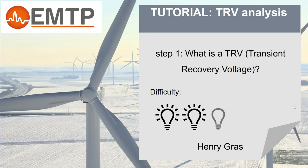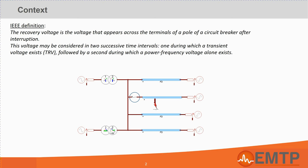The first step of this series will be to understand what a TRV is. According to the IEEE definition, the recovery voltage is the voltage that appears across the terminal of the circuit breaker after interruption. This voltage may be considered in two successive time intervals, one during which a transient voltage exists, followed by a second during which a power frequency voltage alone exists.